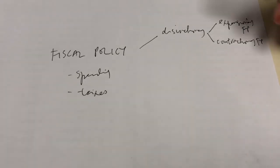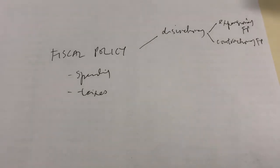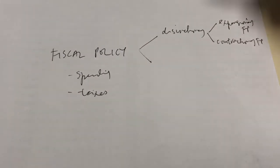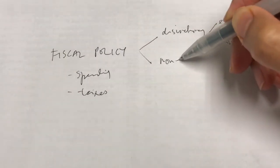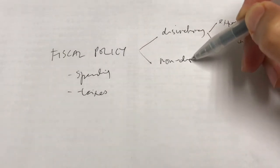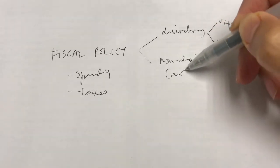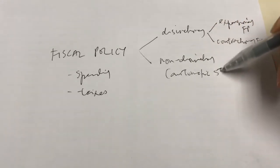Both expansionary and contractionary are discretionary fiscal policy, where the government would deliberately change the tools through law or parliament debates. The other category of fiscal policy, as we've learned, is non-discretionary fiscal policy, also known as the automatic stabilizer.